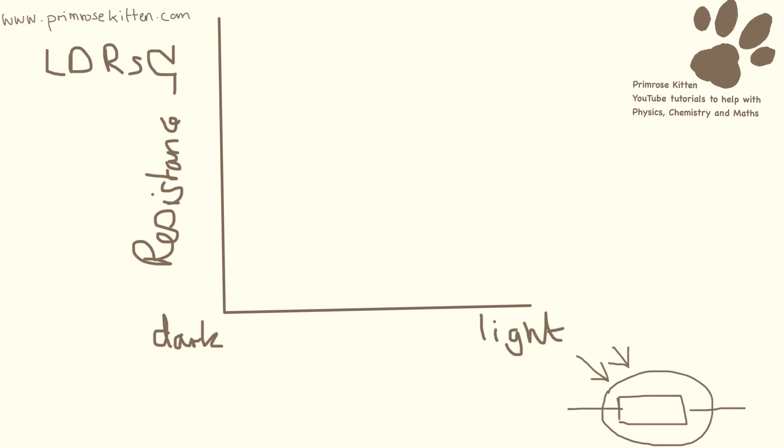So in bright light, we have low resistance, and in darkness, we have high resistance. You need to be familiar with this shape of graph, so we have resistance out here, and then light intensity over here.